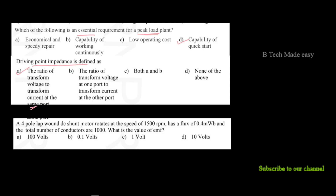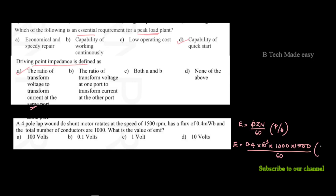A 4-pole lap-wound DC shunt motor rotates at 1500 RPM, has a flux of 0.4 milliweber, and the total number of conductors is 1000. Find the EMF. Using E = (φ × Z × N / 60) × (P / A): E = 0.4 × 10⁻³ × 1000 × 1500 / 60 × (4/4), which gives approximately 10V.